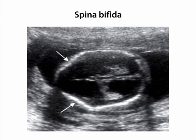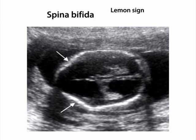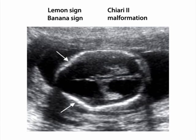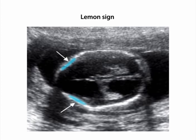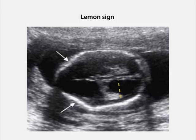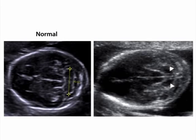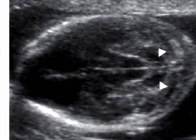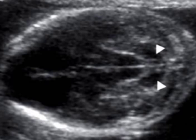Spina bifida is often first detected sonographically by two cranial findings: the lemon sign and the banana sign. Both are manifestations of the Chiari II malformation, which is downward displacement of the cerebellum through the foramen magnum. The lemon sign is a flattening or inward scalloping of the frontal bones. In more than 80% of fetuses with spina bifida, the lateral ventricular atrium is enlarged — that is, ventriculomegaly is present. The banana sign refers to the cerebellar shape that develops when downward displacement of the spinal cord pulls a portion of the cerebellum through the foramen magnum and into the upper cervical canal.